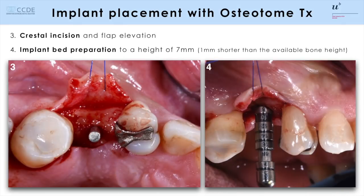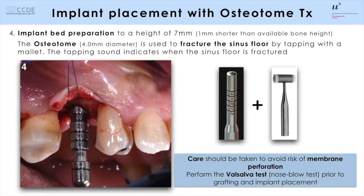The surgery is done with a minimal flap to expose the ridge. You see that an implant bay preparation was done first with a spiral drill to a sink depth of seven millimeters, which was then confirmed with a periapical radiograph. Then the implant bay preparation continues, widening the diameter up to 4.2 millimeters. Here you see the osteotome, which is used to fracture the floor of the sinus, which is done with a mallet.